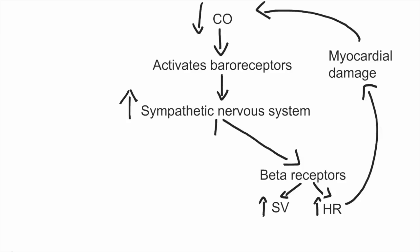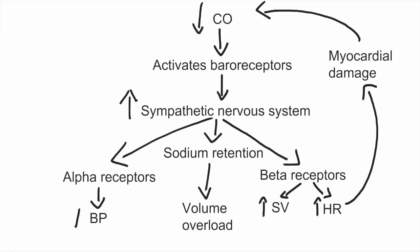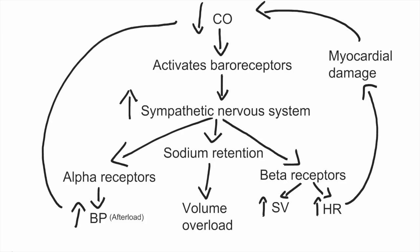The second thing that happens with the sympathetic nervous system is increased sodium retention, thereby increasing fluid retention and leading eventually to volume overload. The third effect of the sympathetic nervous system important in the pathophysiology of congestive heart failure is activation of alpha receptors. Activation of alpha receptors leads to increased blood pressure, which can also be thought of as afterload. This increase in blood pressure or afterload can further depress cardiac output, causing a vicious cycle.